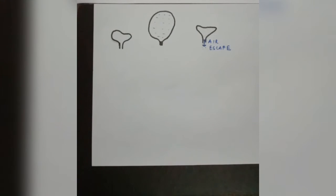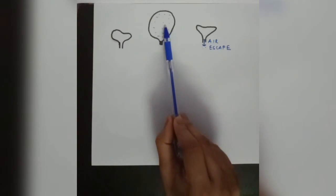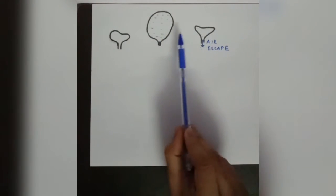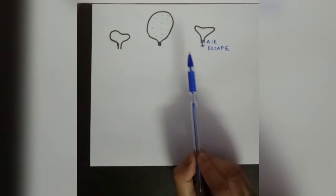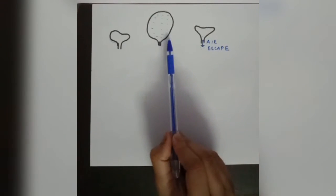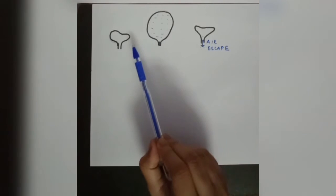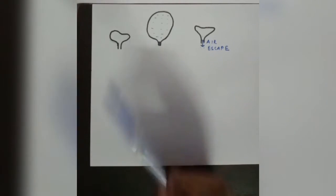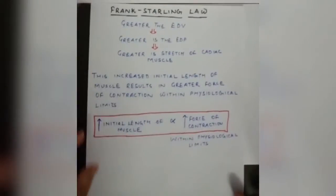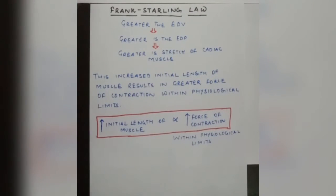This is known as Frank-Starling law. Within physiological limits, after a certain limit we cannot increase volume further — there is a maximum beyond which the law does not hold. This is what is meant by 'within physiological limits' in Frank-Starling law.